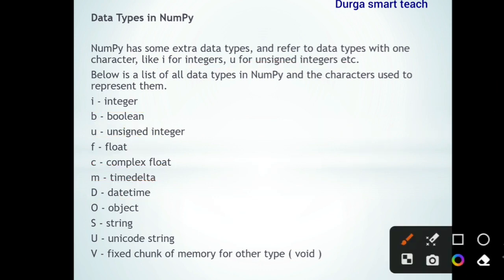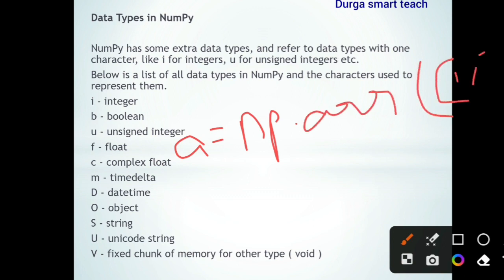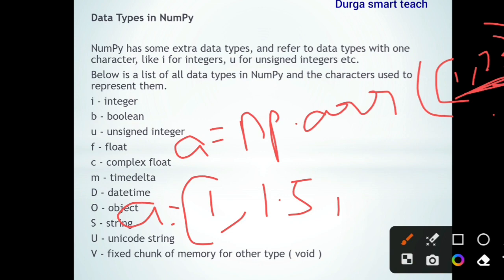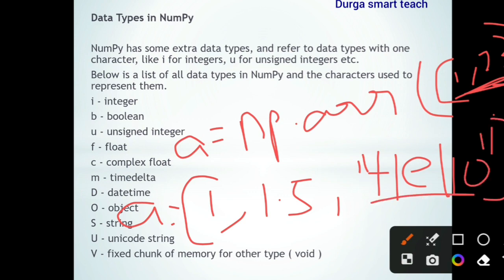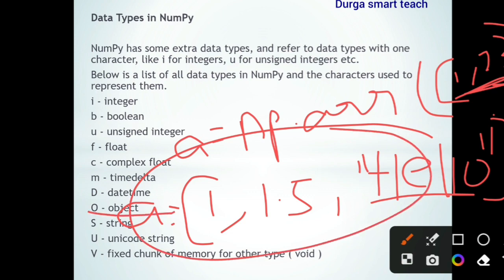Object type is used when an array contains heterogeneous elements. Normally, an array is a collection of homogeneous elements. For example, `a = np.array([1, 2, 3])` is integer type. But if an array contains elements like `[1, 1.5, 'hello']` — mixing integer, float, and string — that array's data type is considered 'object'. NumPy can store heterogeneous data using the object data type.